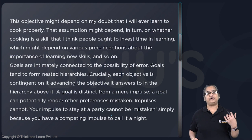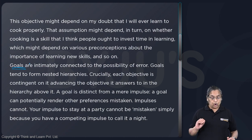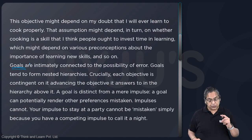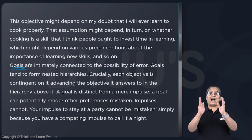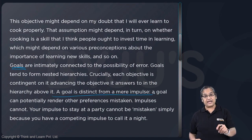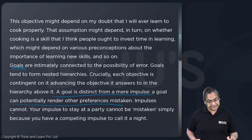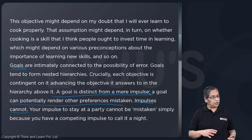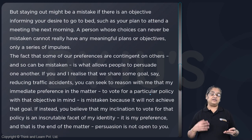Goals are intimately connected to the possibility of errors. Goals tend to form nested hierarchies — each objective is contingent on it advancing the objective above it in the hierarchy. A goal is distinct from a mere impulse. A goal can potentially render other preferences mistaken; impulses cannot. You can make mistakes where goals are concerned, but not where impulses are concerned.